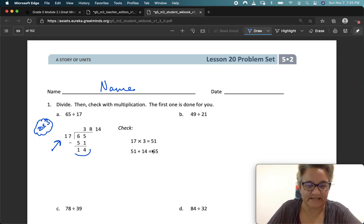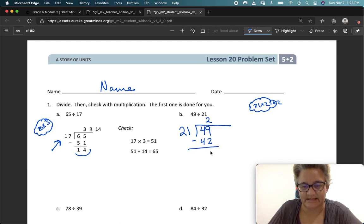So three remainder 14. And then I check my work by multiplying three times 17 and getting 51, and then 51 plus my remainder equals 65. Next one. So I have to rewrite my problem. Remember, the dividend goes inside, and the divisor goes outside. Subtract, and I have 7.